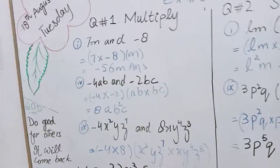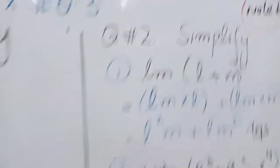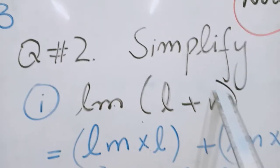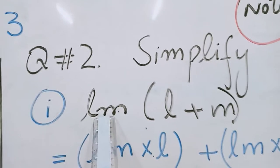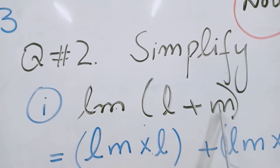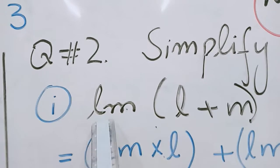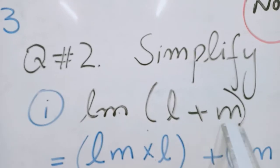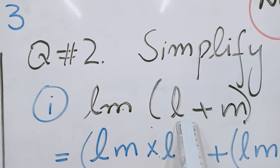Now come to the question number two. In question number two, simplify, you have to simplify. We have now two polynomials, one is monomial and other is binomial. It has two terms, that's why it is called binomial. It has only one term, it is called monomial.